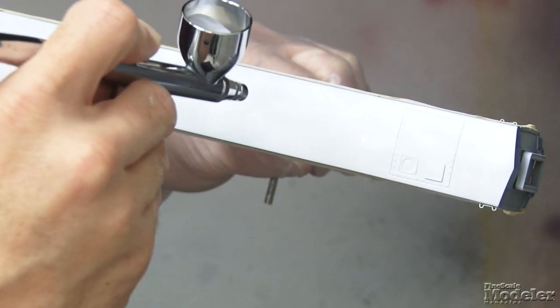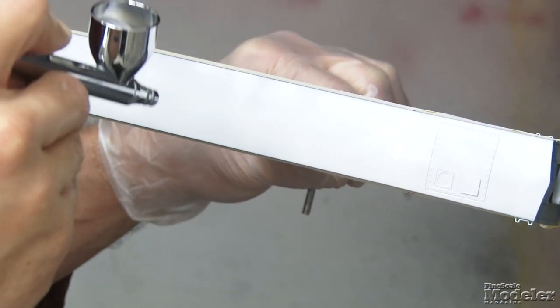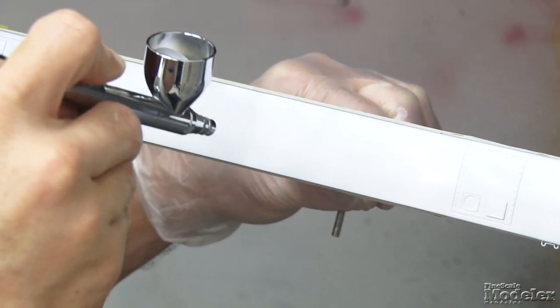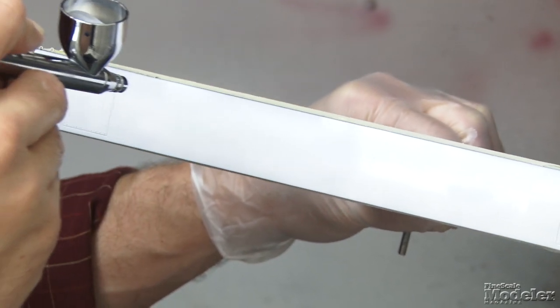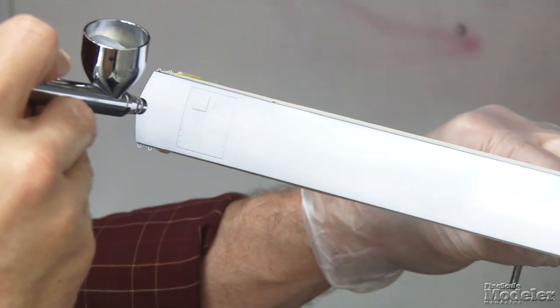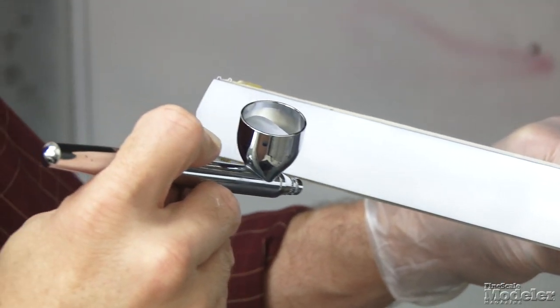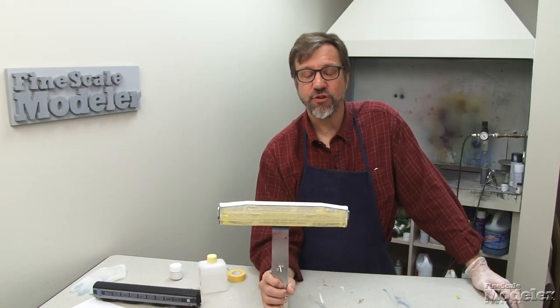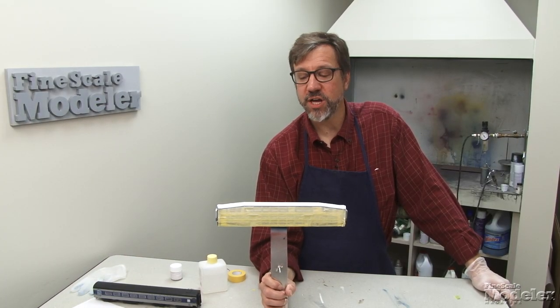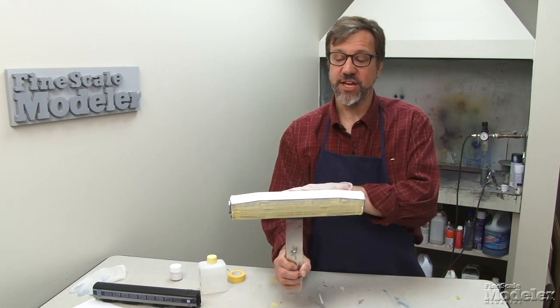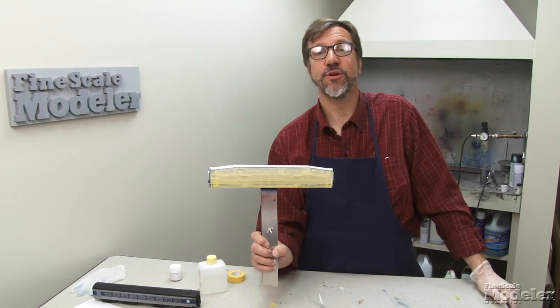Just start going back and forth over it until it looks good and uniform. So I'm pretty happy with the density on the white. I'm going to let that dry overnight and then tomorrow we'll come back and spray the black on the ends of the car and along the edge of the roof.